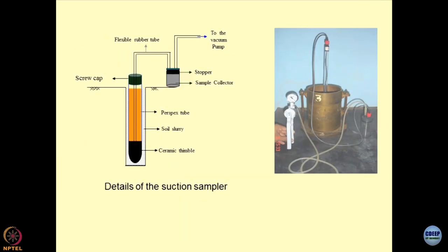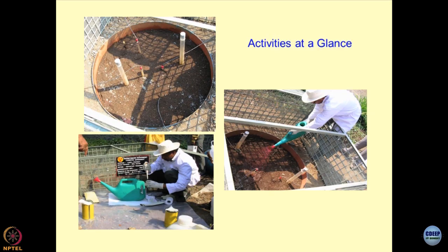This is how the suction samplers look like. We train them in a CBR mold to see whether they are working alright or not, and when you apply suction, pore solution gets collected. Just to show you how the activities are done in the field - this is how the whole system has been created. The two access tubes are fitted, four suction samplers are fitted, and these are the tubes which are connected to the suction samplers.